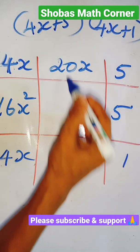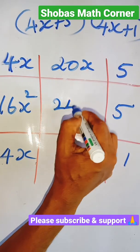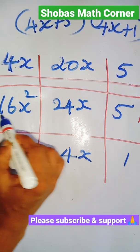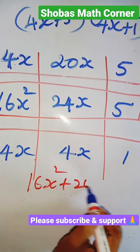And in the center you should not multiply, you should add. So 20 plus 4, I will be getting as 24x. So my answer is this: 16x square plus 24x plus 5.